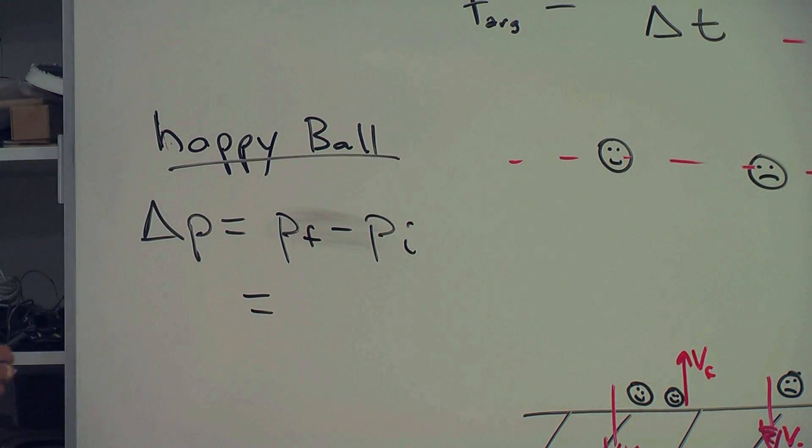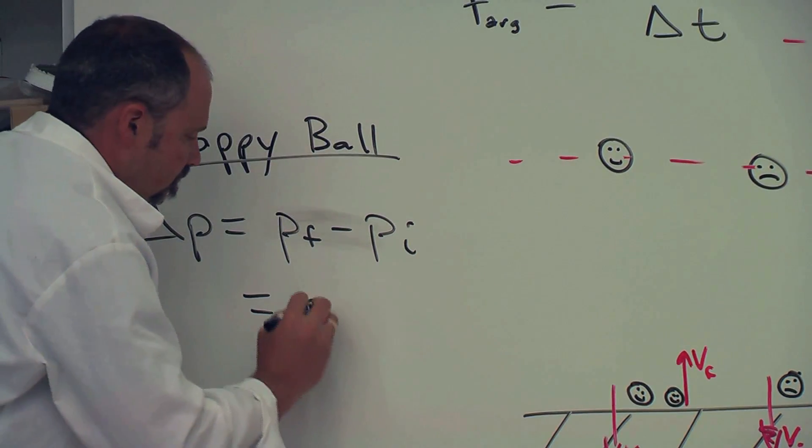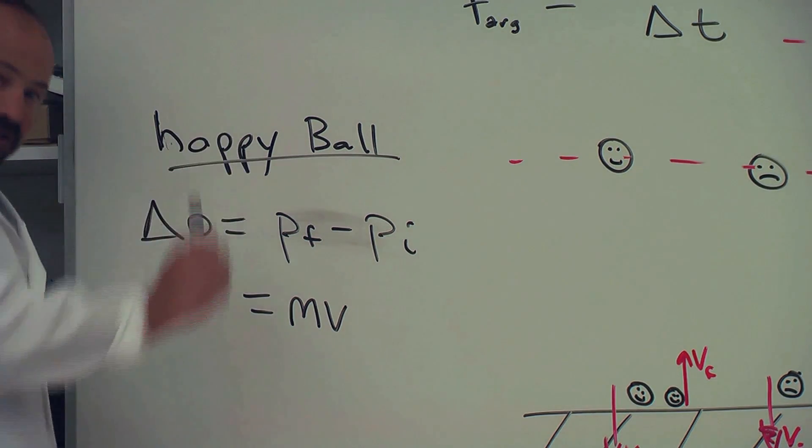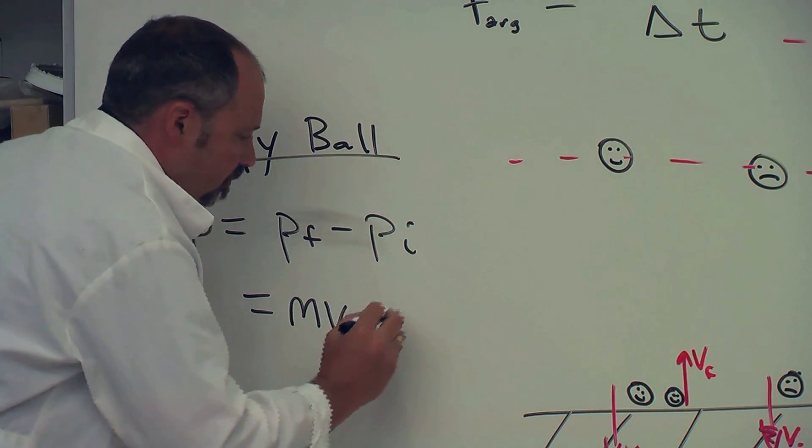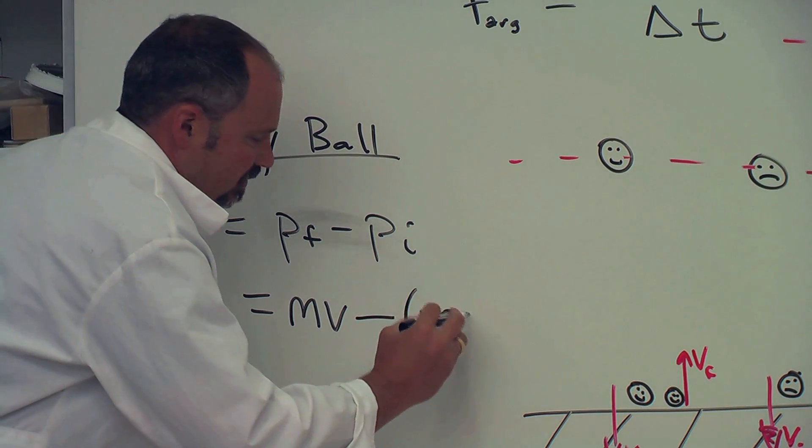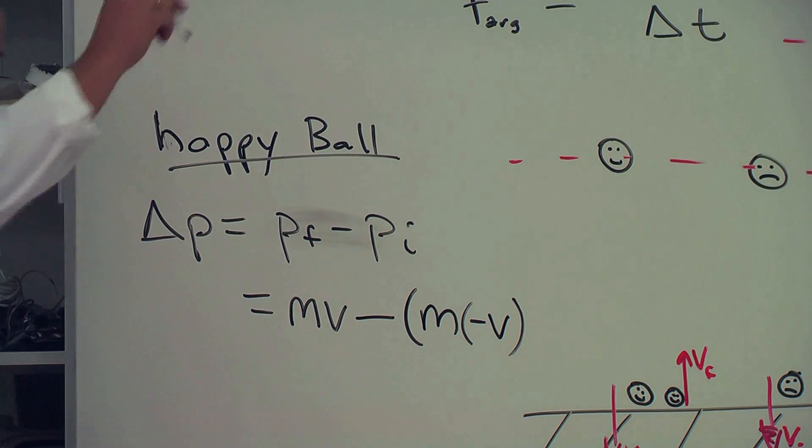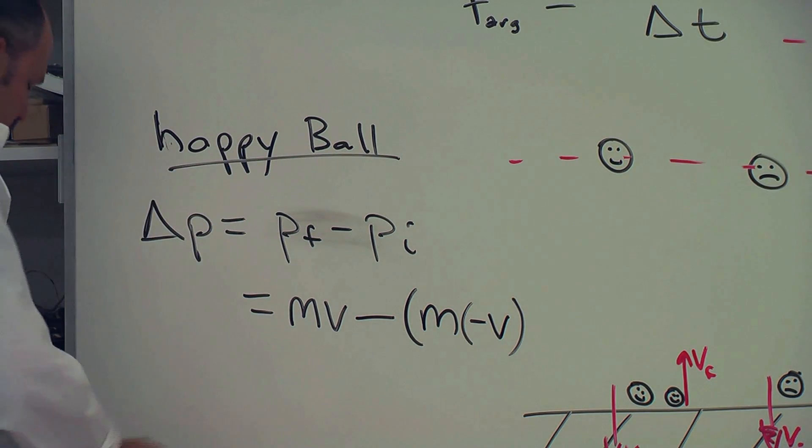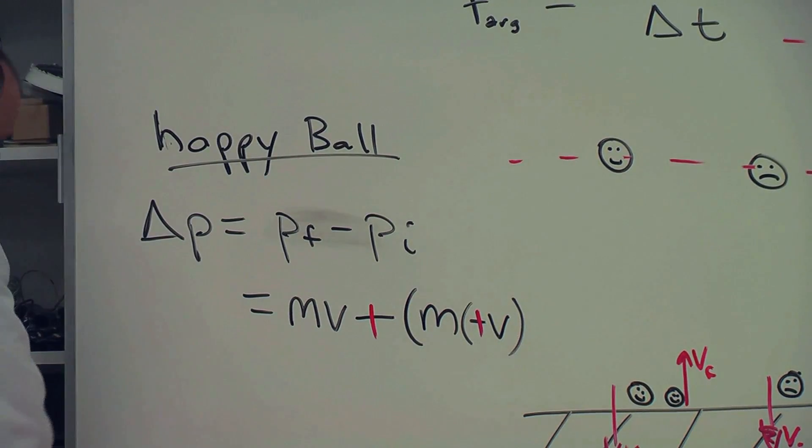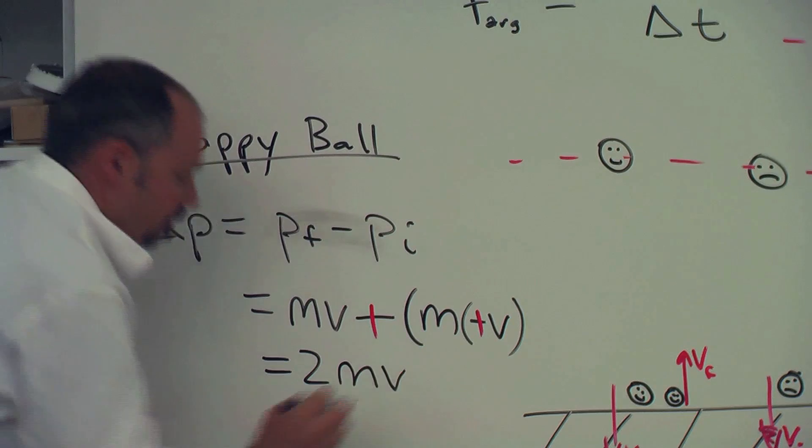The final momentum for the happy ball, well it's mv. And it's in the positive direction. Before, it's mass times the initial speed, which is just a negative v. Because it's going downward in the negative direction. These two become positive. And we get a change of impulse for the happy ball of 2mv.